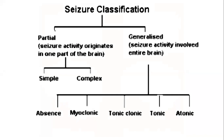Here is the seizure classification. Partial seizures originate from one part of the brain; generalized seizures affect the entire brain through epileptic discharge. Memorize that there are only two types of partial seizures: simple and complex. For generalized seizures, we have absence seizures, myoclonic seizures, tonic-clonic seizures, and status epilepticus.